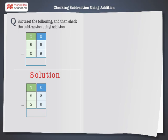Subtract the digits at the ones place first. That is, 8 minus 9. Since 8 is smaller than 9, we cannot subtract 9 from 8. So, regroup 68 as 5 tens and 18 ones. Now subtract 9 from 18. We get 9.